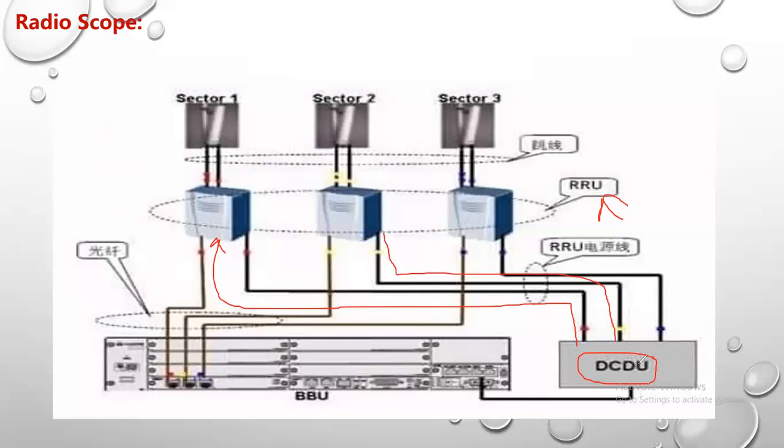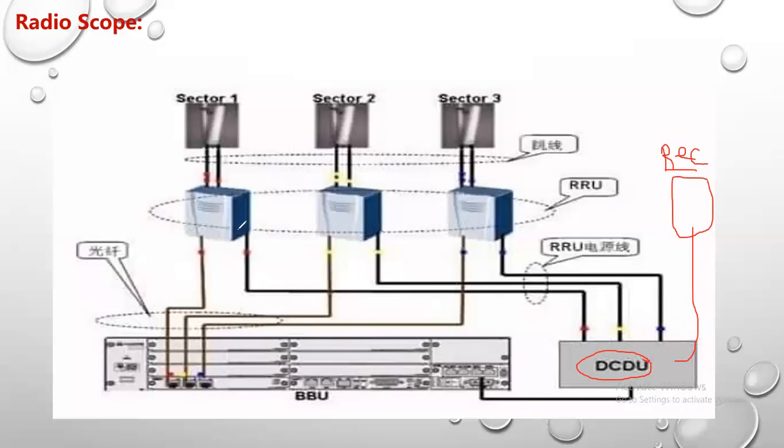And from where this DCDU get power or get DC power? It get power from the rectifier. So the rectifier will give DC power to the DCDU, and this DCDU will give power to the RRUs to power it and make it running.